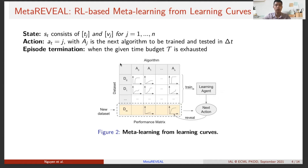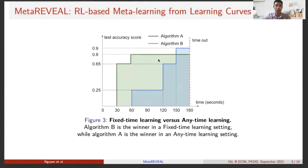Based on two real-life scenarios, we introduce two learning settings called fixed-time learning and anytime learning. We explain the difference in Figure 3, showing two learning curves of two algorithms competing on the same dataset within 180 seconds. The Y-axis shows the test accuracy score. In fixed-time learning, algorithms are evaluated by their final performance. In this case, algorithm B, shown in blue, is the winner.